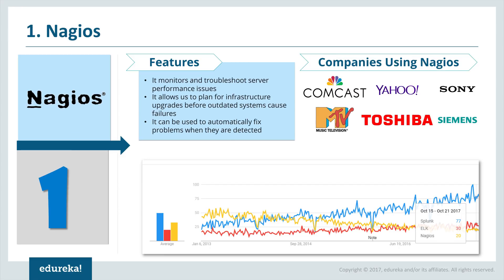Nagios is a continuous monitoring tool. It monitors and troubleshoots server performance issues, allows planning for infrastructure upgrades before outdated systems cause failures, and can automatically fix problems when they are detected. Companies using Nagios include Comcast, Yahoo, Sony, MTV, Toshiba, and Simmons. This completes our list of top 10 DevOps tools.